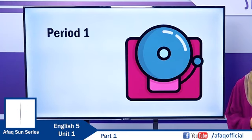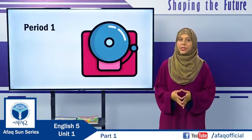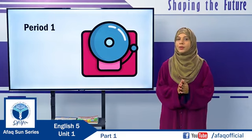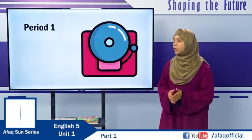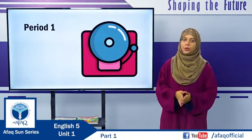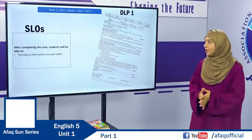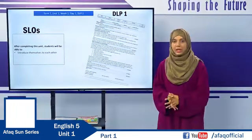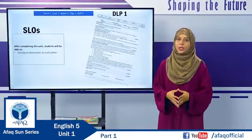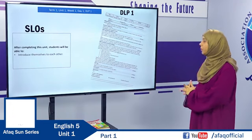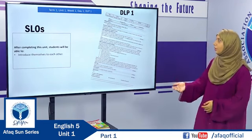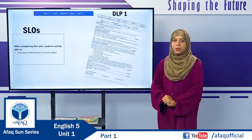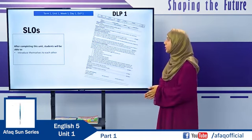This is the first period of Unit 1. In each week of a unit, there are seven periods allocated for English. At the end of this lesson, students will be able to introduce themselves to each other. As this is the first English period of Grade 5, the complete methodology to cover this SLO has been given in DLP 1, which should be covered on the first day of the first week of first unit of Term 1.